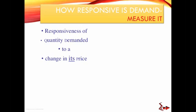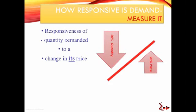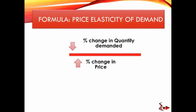We measured the responsiveness of the demand function — specifically, the responsiveness of quantity demanded to a change in its own price. For example, if the price of coffee changes, what is the change in demand for coffee itself? We measure the percentage change in quantity demanded as a result of a percentage change in price. Using our example: a 20 percent increase in price reduces quantity demanded by 50 percent, so it's 50 divided by 20, giving us 2.5 — the price elasticity is −2.5.